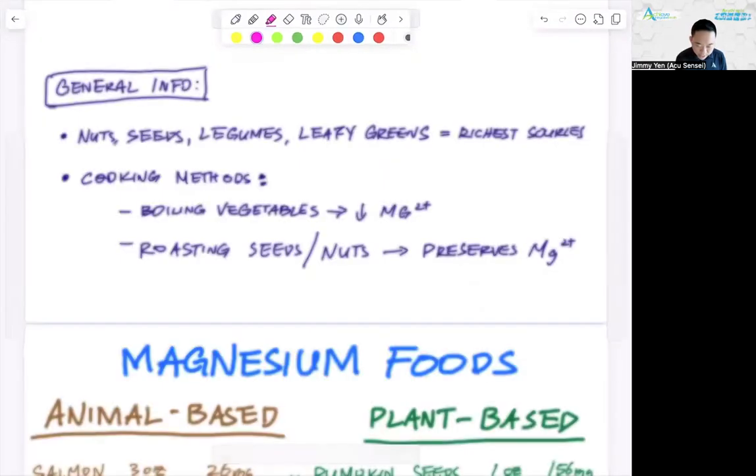General information. Food is always going to be your number one source of nutrition to fix the root cause. Nuts, seeds, legumes, and leafy greens are the richest source of magnesium. This is a general category of food. Eat more of those in your dinnertime. Take away the animal protein, just eat vegetarian during your dinnertime.